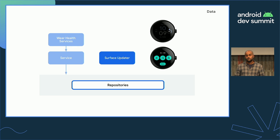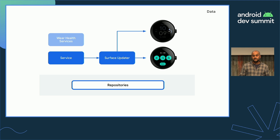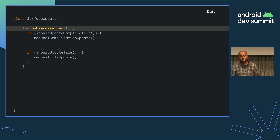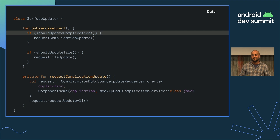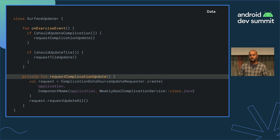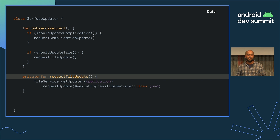We made a class called SurfaceUpdater that knows how to update these surfaces. Whenever it's told that there's new data, the SurfaceUpdater can choose whether to request a refresh. OnExerciseEvent is the public function called whenever there's new data — this class can decide whether to ignore it, for example if one was recently requested. For complications, we create an update request using the app context and the complication class name, and for tiles there's a similar API as well.